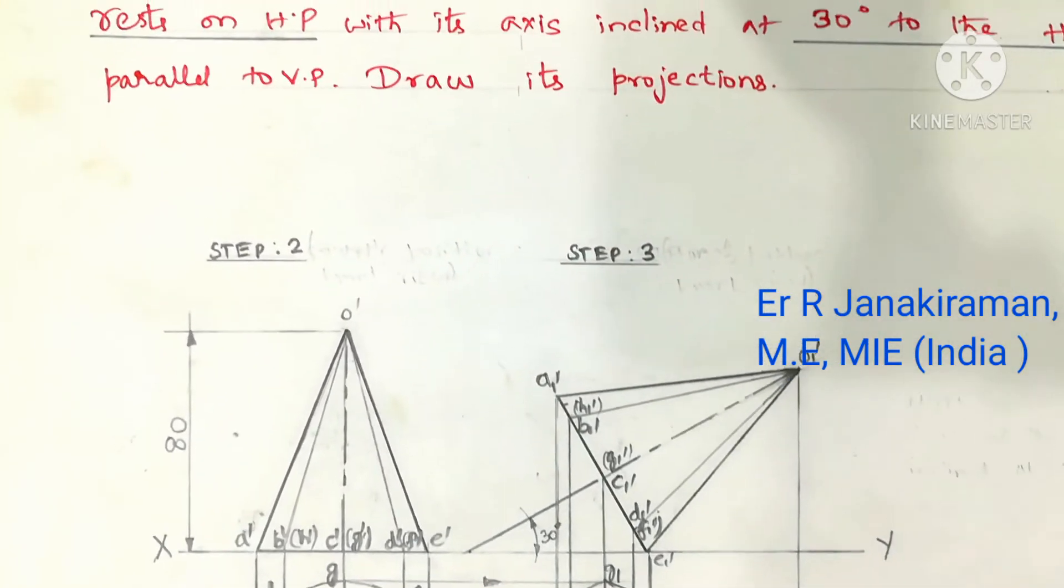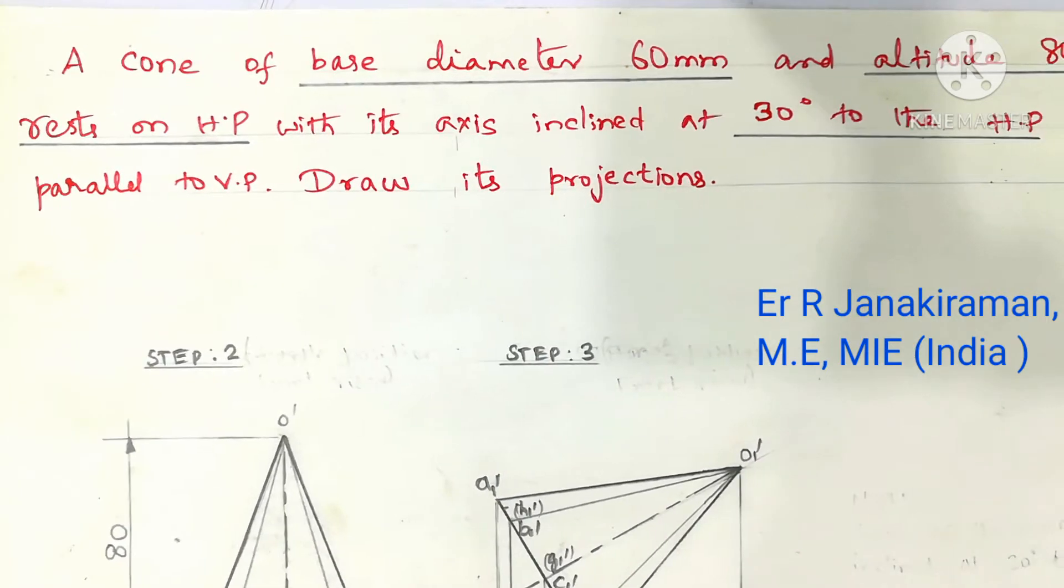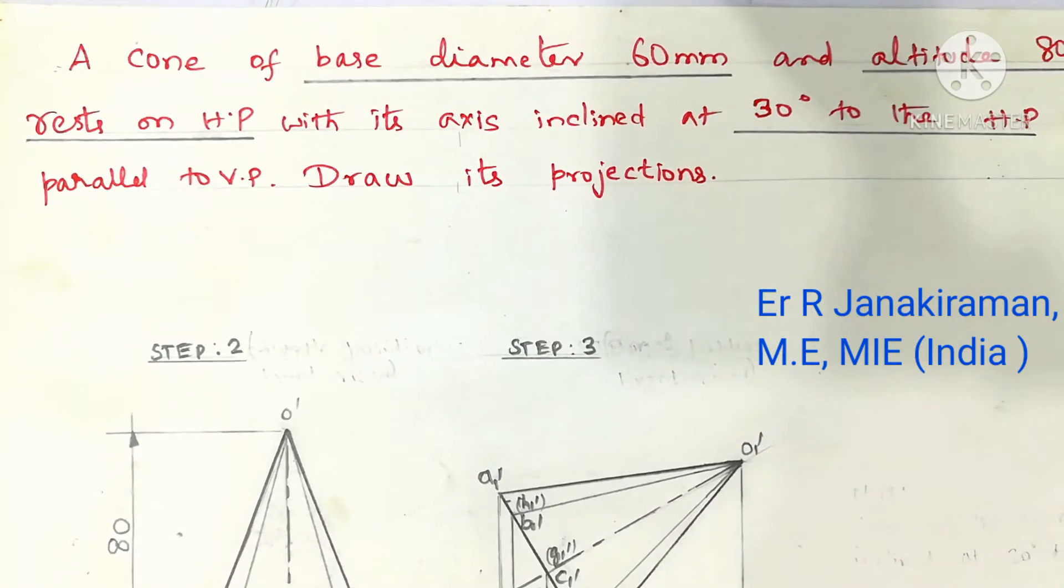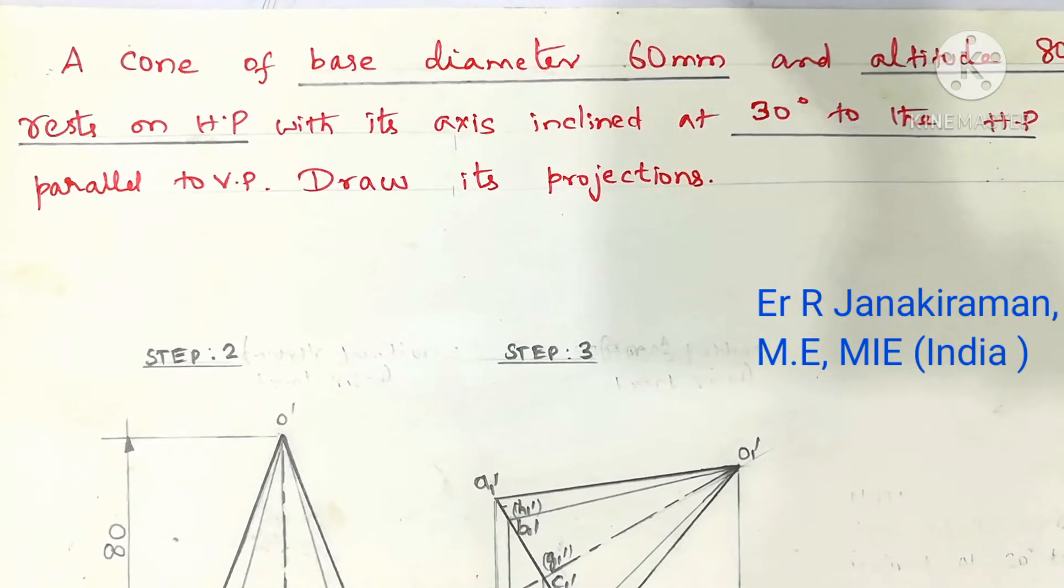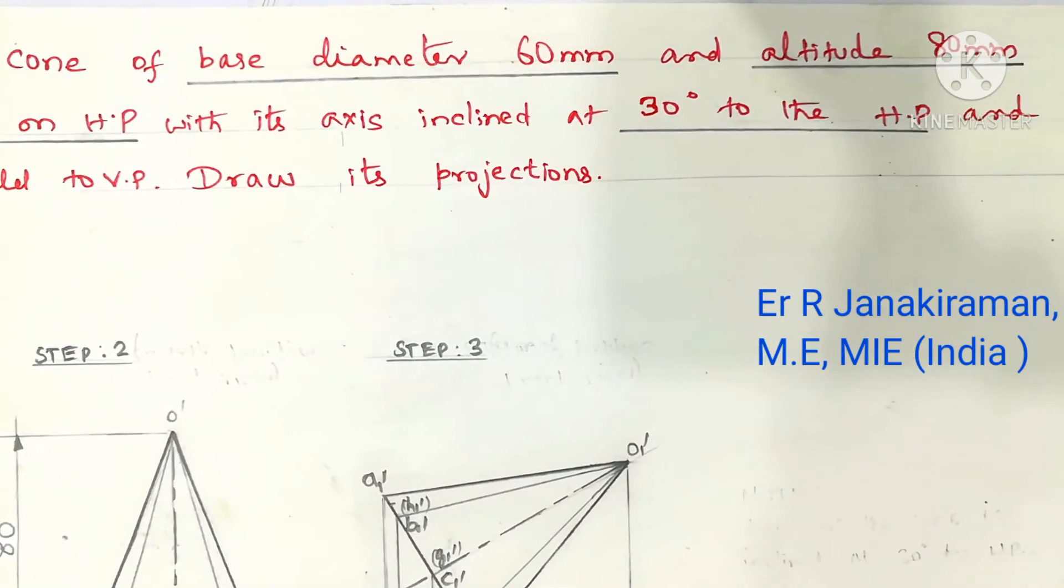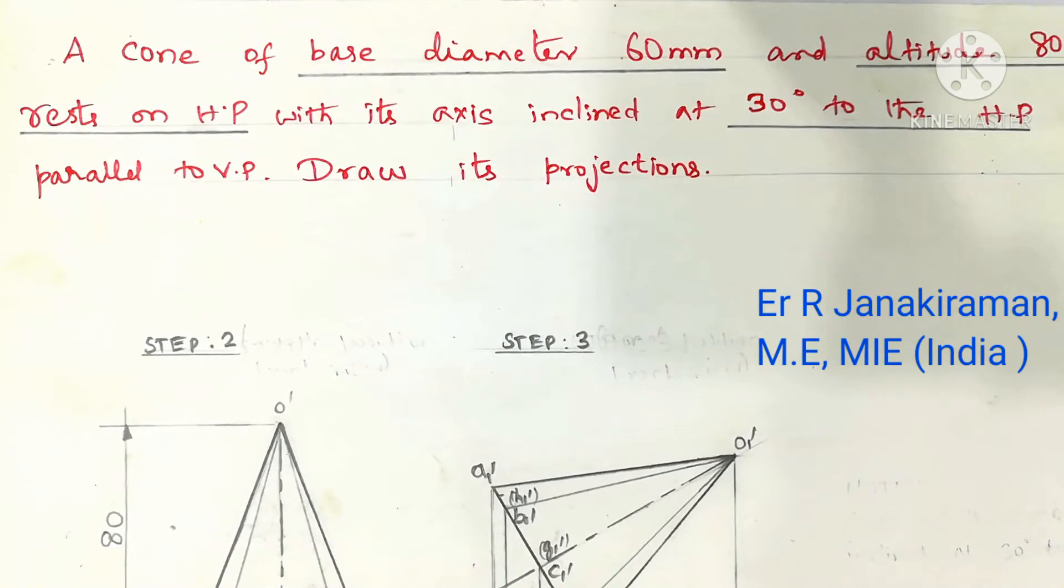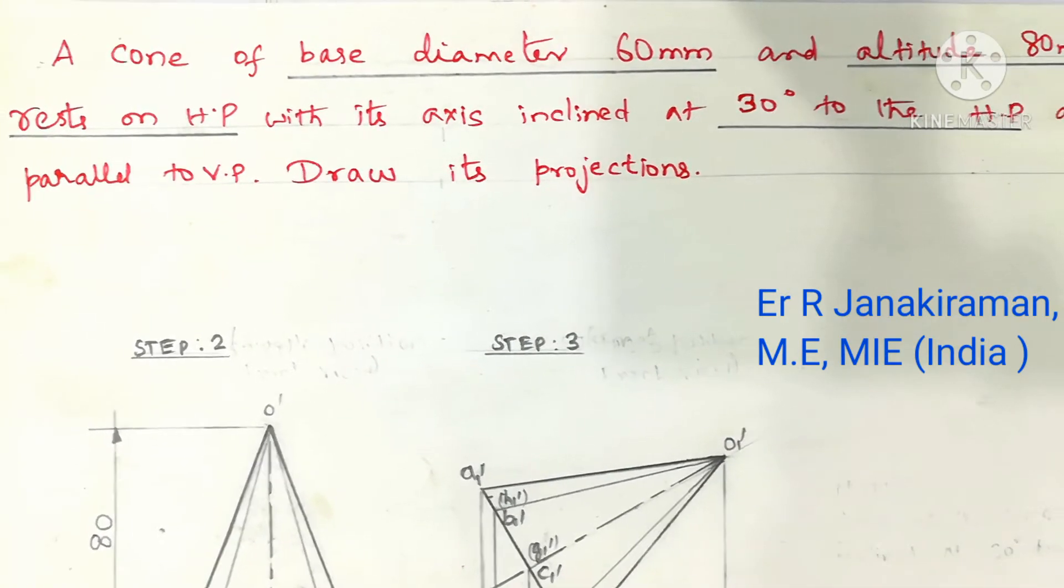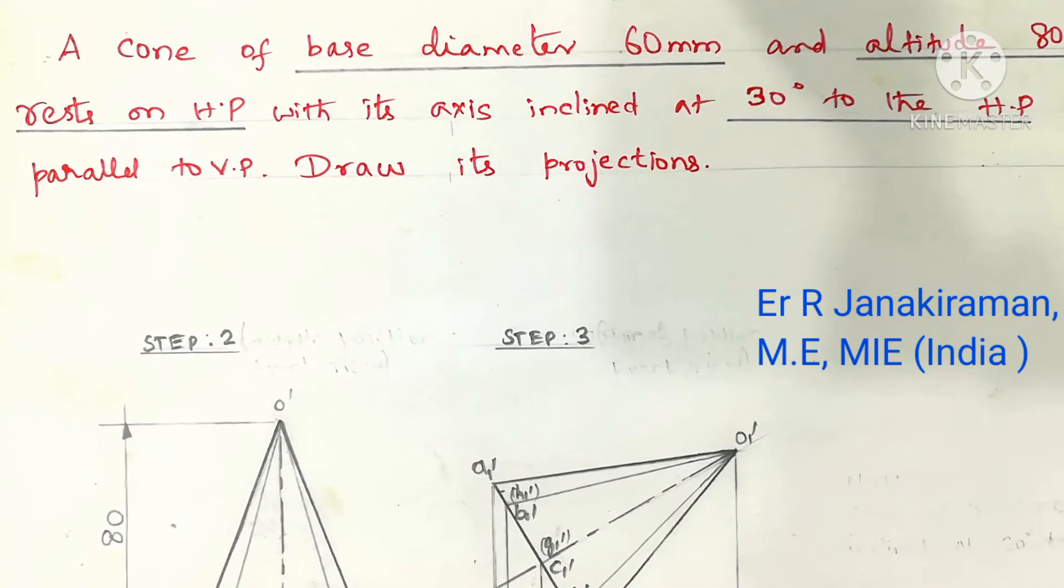Consider a question given like this regarding projections of cone. A cone of base diameter 60 mm and altitude, altitude means height of the cone is 80 mm. It rests on HP with its axis inclined at 30 degree to the HP and parallel to the VP. Draw its projections.